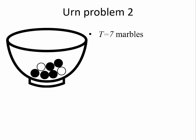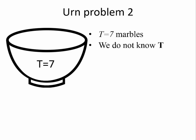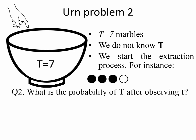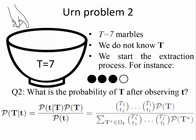Problem 2: Suppose we know the total number of marbles in the urn, but we don't know their color distribution. Now we start the extraction process without replacement from the urn. The question we can pose now is, what is the color distribution probability of the urn big T after observing a color distribution small t? We can apply the Bayes rule to get this probability.